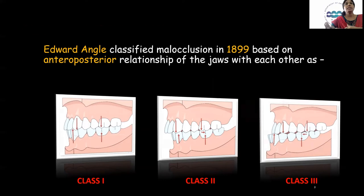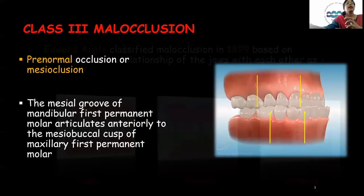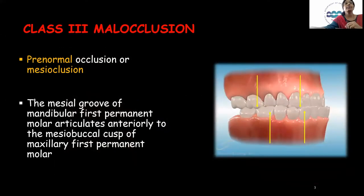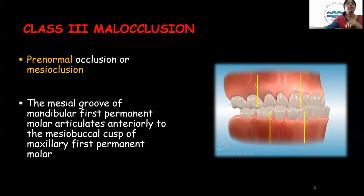Class 3 malocclusion is very easy to identify but very difficult to treat. The other name for Class 3 malocclusion is pre-normal occlusion or mesiocclusion, where the mandible is in a mesial relation to the maxilla.